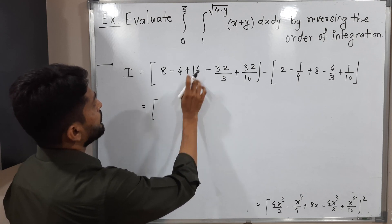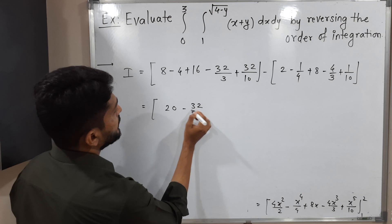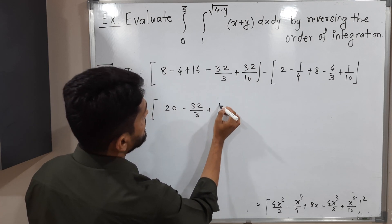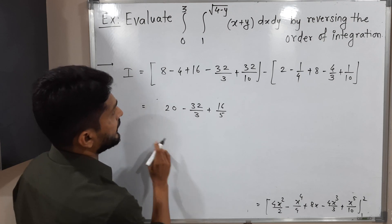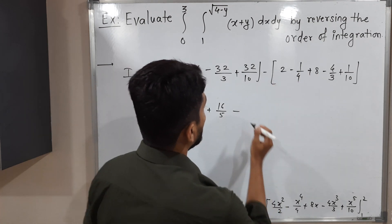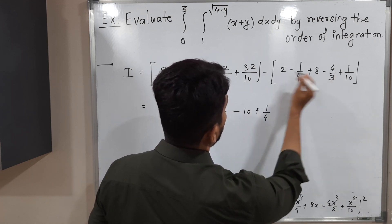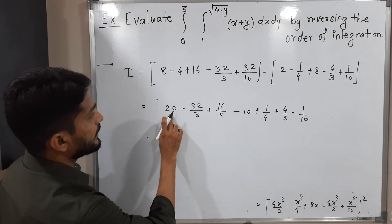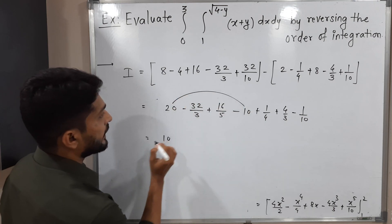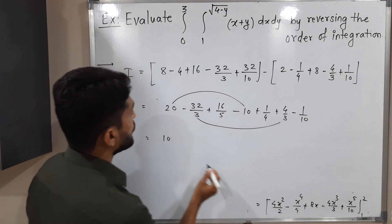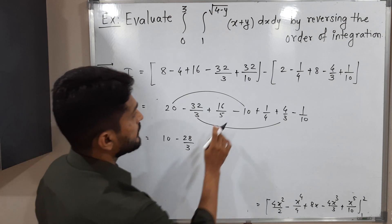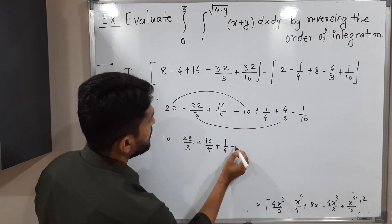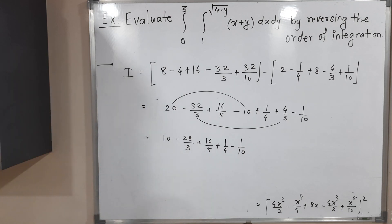Simplifying: 20 minus 10 gives 10; minus 32 over 3 plus 4 gives minus 28 over 3; plus 16 over 5; plus 1 over 4; minus 1 over 10. Performing the final arithmetic across all terms.